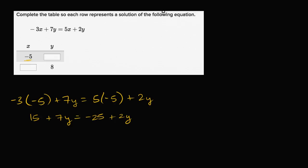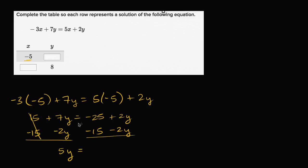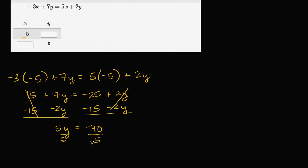Now to solve for y, I'll subtract two y from both sides to get rid of the two y on the right. And I'll subtract 15 from both sides to get the constants on the right. That leaves 15 minus 15, which is zero, so the 15 cancels. Seven y minus two y is five y. Negative 25 minus 15 is negative 40. Two y minus two y is zero. So five y equals negative 40, and dividing both sides by five gives y equals negative eight.